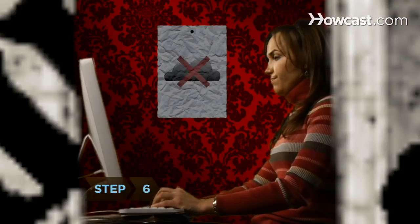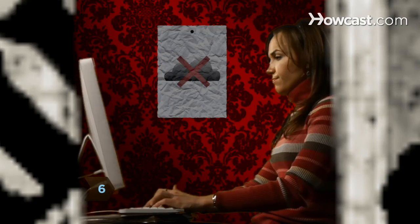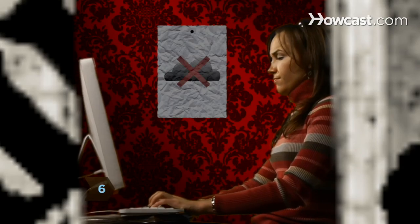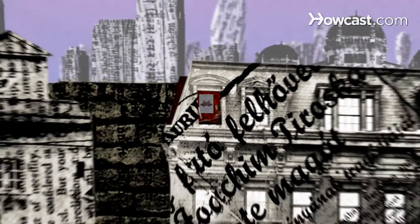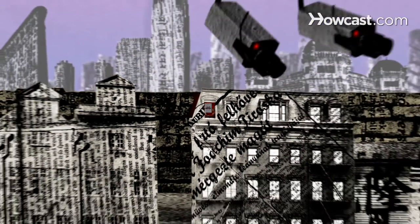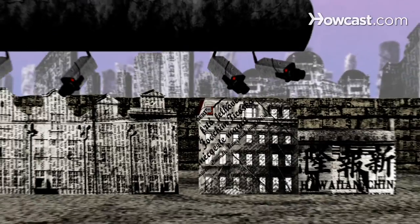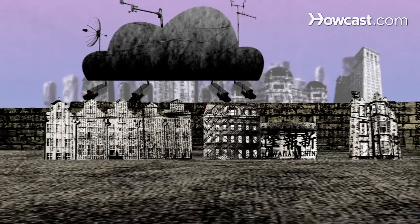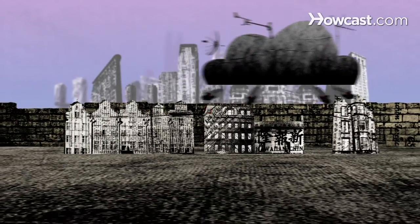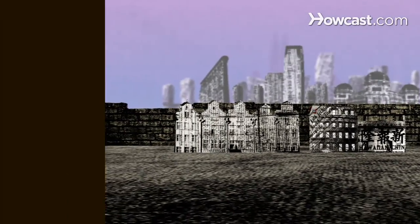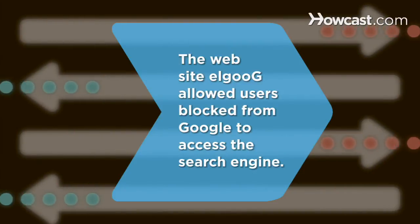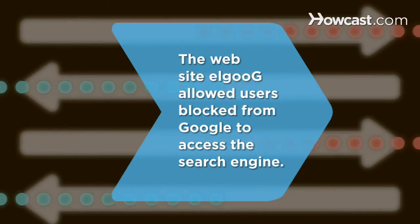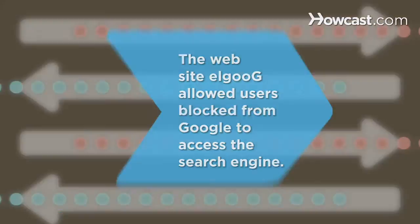Step 6: New circumvention techniques pop up all the time, and it can take a while before Internet filtering proxies discover and block them. You may need to alternate between different methods for the best results. Did you know? The website Elgoog allowed users blocked from Google to access the search engine.